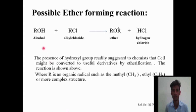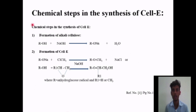Possible ether-forming reaction: The alcohol group (R-OH) reacts with the alkyl chloride group (R-Cl) to form ether, with hydrogen chloride as the by-product. In the synthesis of cellulose ether, the first step is formation of alkali cellulose, where the alcohol group reacts with sodium hydroxide to form alkali cellulose and water. Then alkali cellulose reacts with methyl chloride (Cl-CH3) to form cellulose ether, with sodium chloride as by-product. Here R is an anhydrous glucose radical and R1 is hydrogen or CH3.